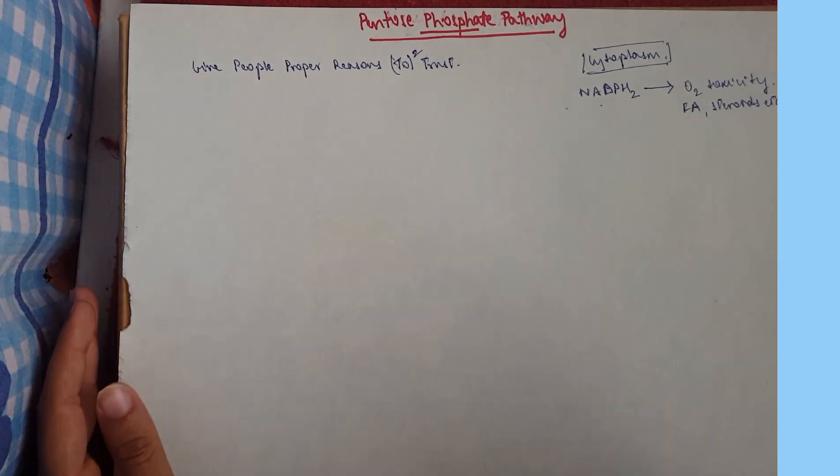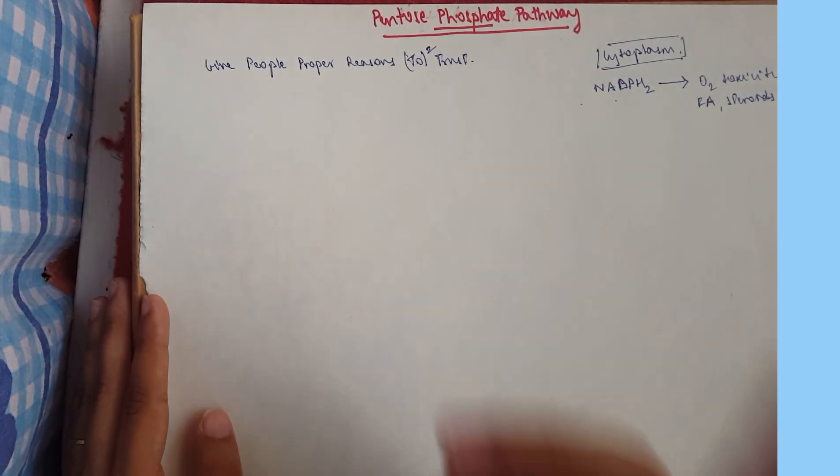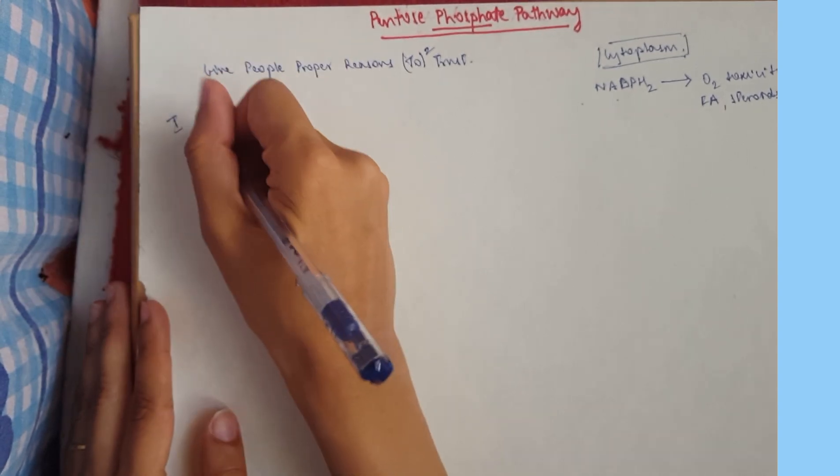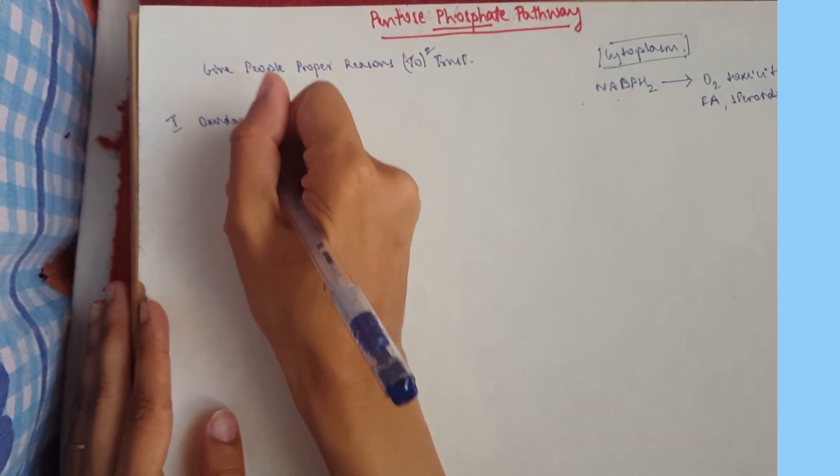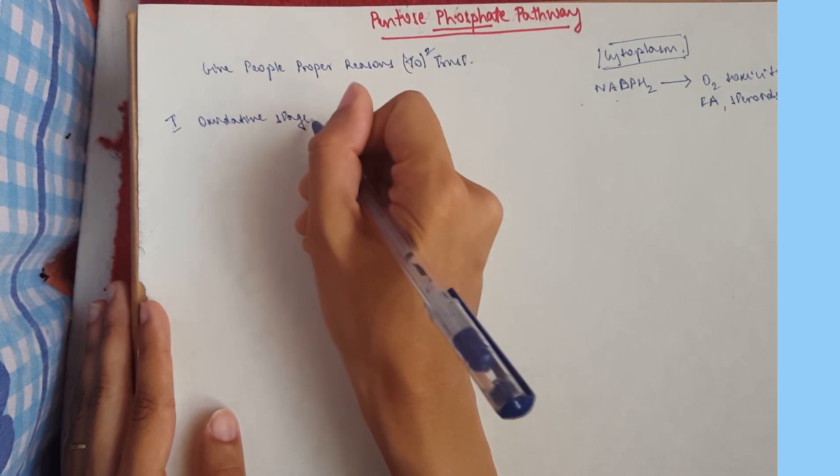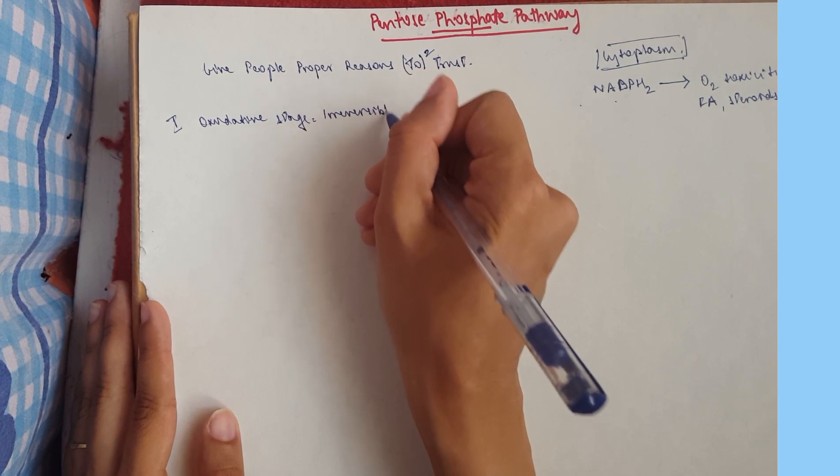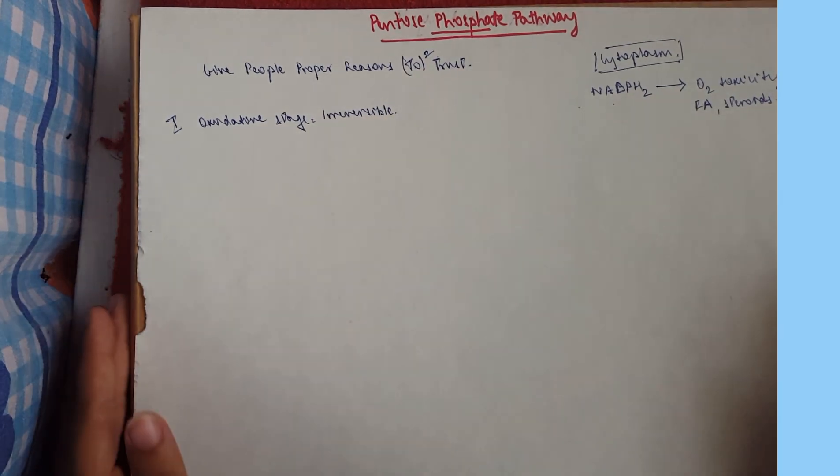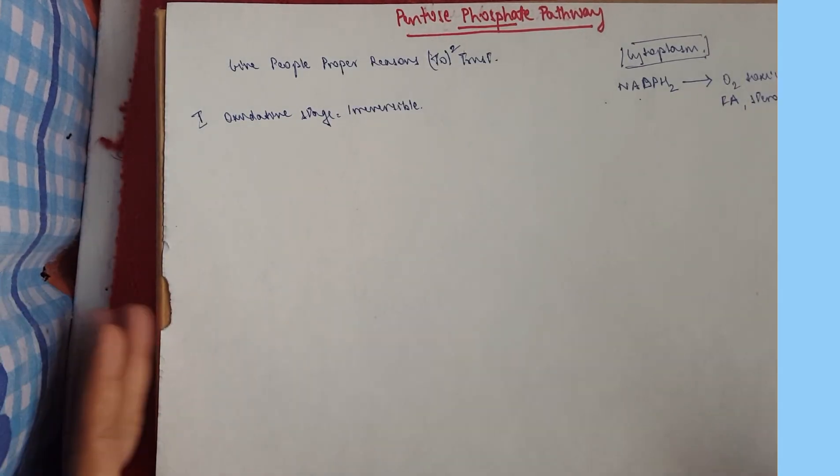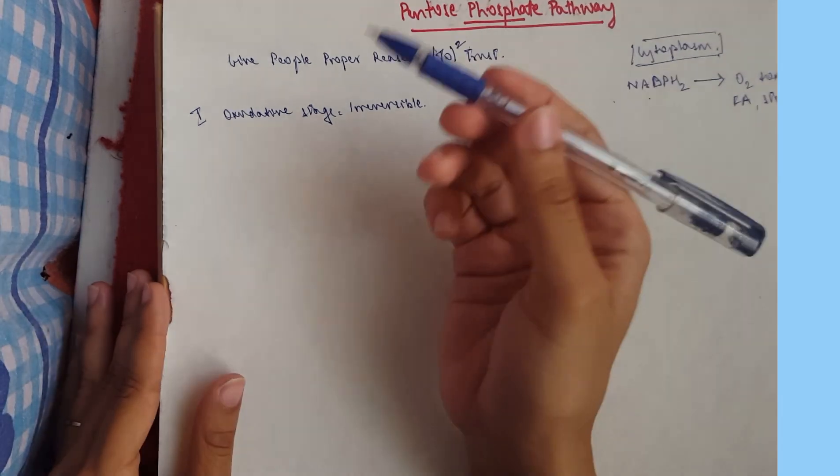All right, so that was a general small little bit about the PPP. Now we can start. So the PPP has got two stages. The first stage is the oxidative stage and it is irreversible, and the second stage is a non-oxidative stage or the reversible stage. I'll do that later in a bit. So first we're going to start with our substrates and products and then we move on to a black pen for the enzymes.